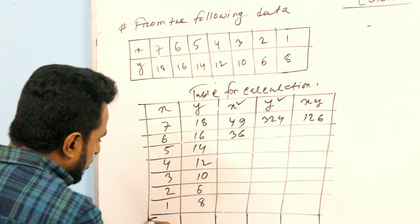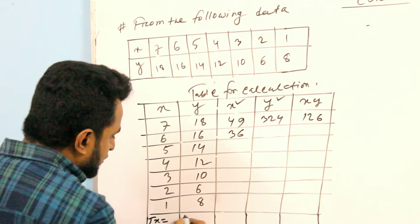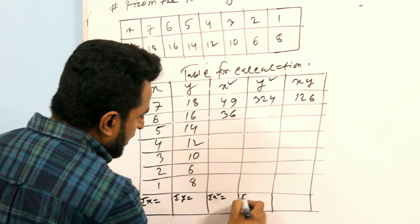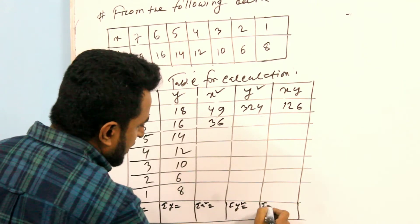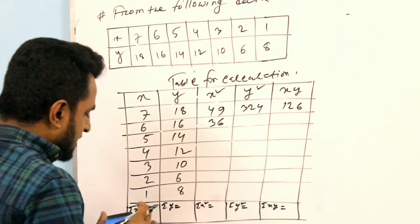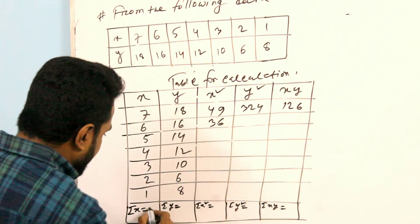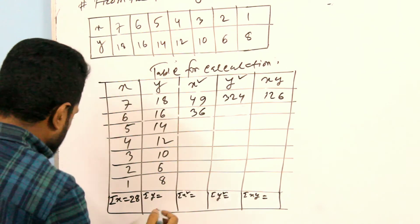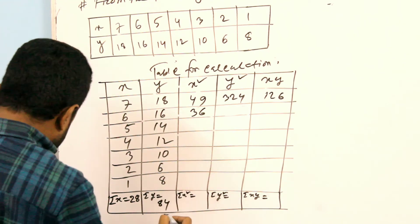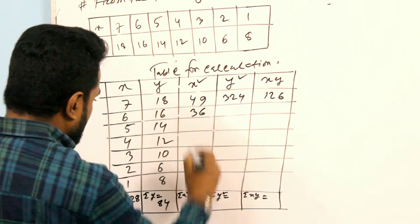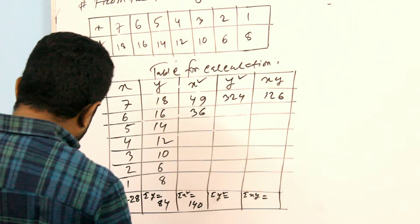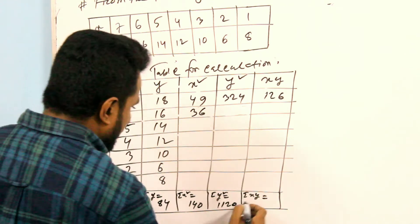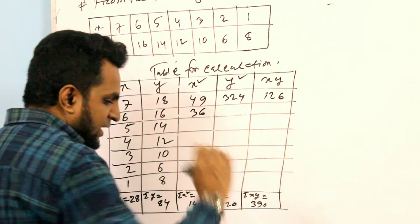Sum of X, sum of Y, sum of X squared, sum of Y squared, sum of XY. Sum of X is 28, sum of Y is 84, X squared is 140, and sum of XY is calculated.